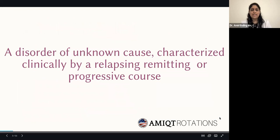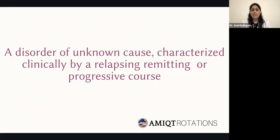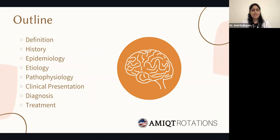Multiple sclerosis, or MS, is a disorder of unknown cause characterized clinically by a relapsing, remitting, or progressive course. For the outline of this presentation, I'm going to start off with a definition, moving on to the history and epidemiology, continuing with etiology, pathophysiology, then clinical presentation and diagnosis, and finally concluding with treatment.